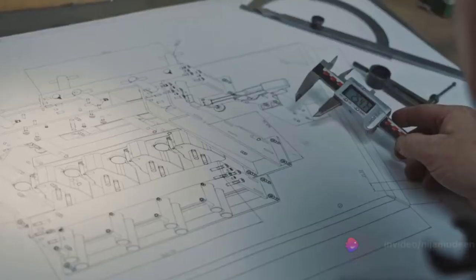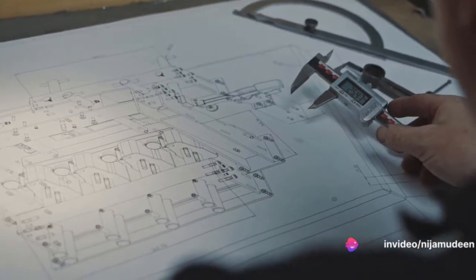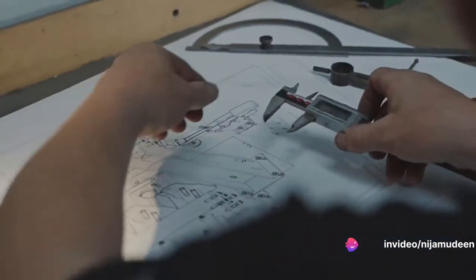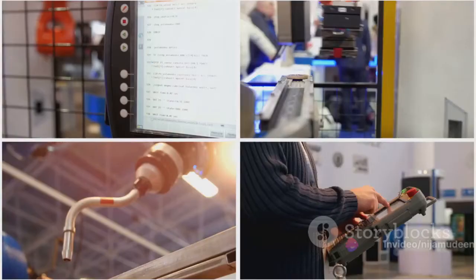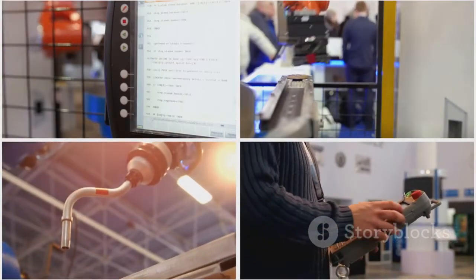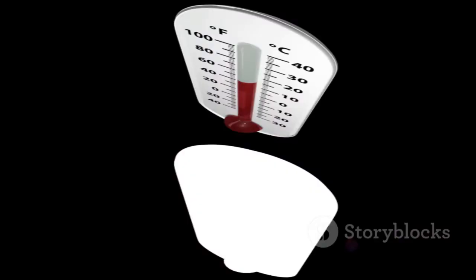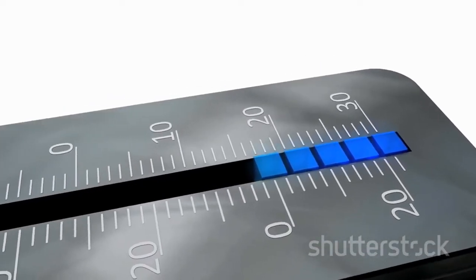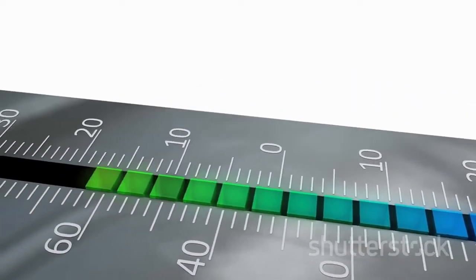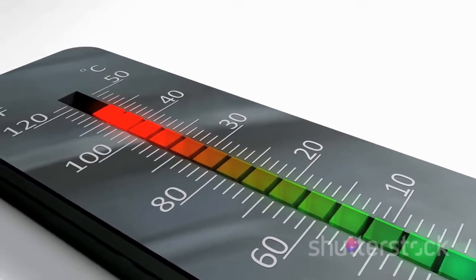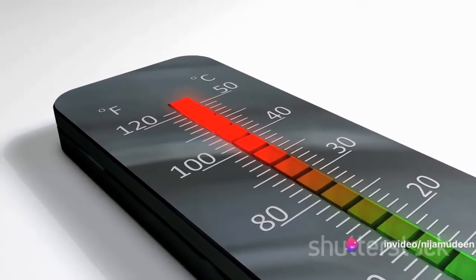This precision makes four-wire RTDs ideal for applications where accuracy is paramount. They are used in industries like aerospace, scientific research, and any other field where even the slightest temperature variation matters. To summarize, four-wire RTDs may seem a tad complicated, but they offer the highest level of accuracy among RTDs. They go that extra mile to ensure temperature readings are as precise as they can be. With the highest accuracy, four-wire RTDs are the go-to choice for applications requiring precision temperature measurements.